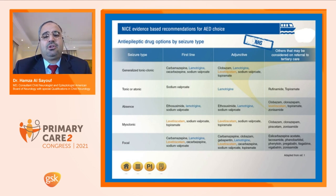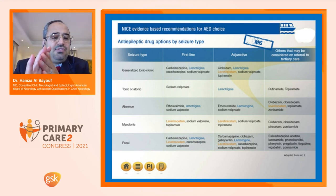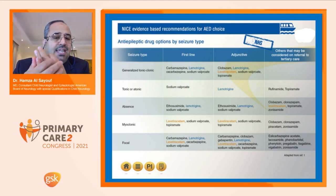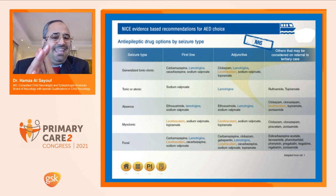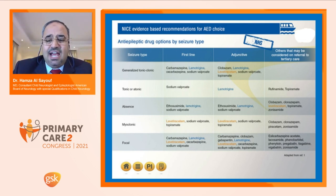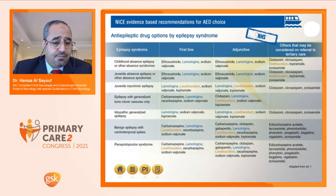Evidence-based recommendations for AED choice: start low and go slow, match medication to correct seizure type. Partial onset: start with Trileptal, Keppra, or Vimpat. Generalized onset: start with Keppra, Topiramax, Lamictal, Zonegran, Depakine, clobazam, or Rivotril. Absence epilepsy: Ethosuximide (Zarontin), Depakine, Lamictal — don't use Topiramax for absence epilepsy. These are the best medications based on NICE guidelines and our experience. Knowing this will make your clinical life much easier.